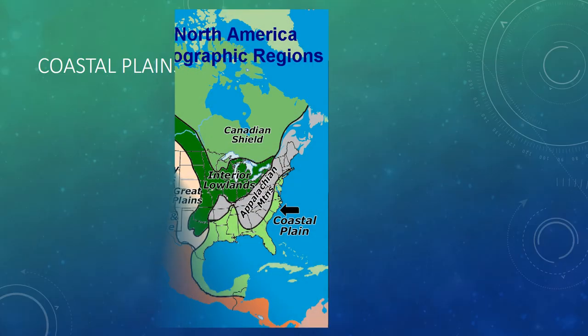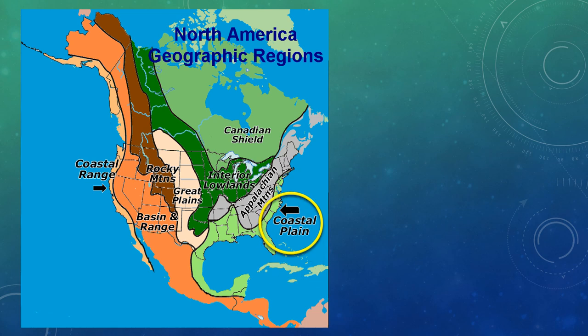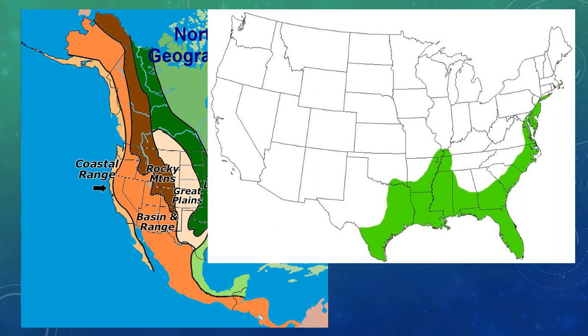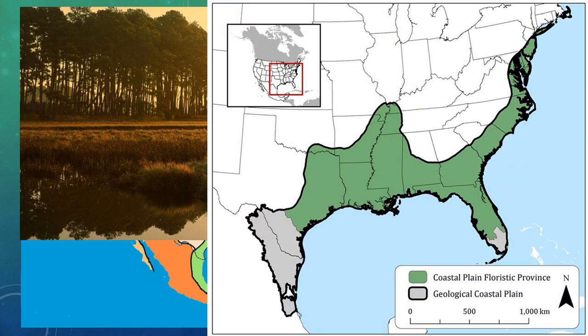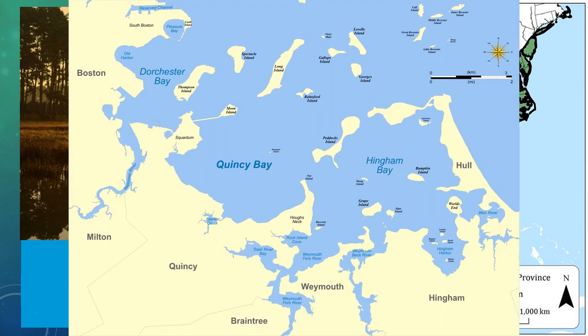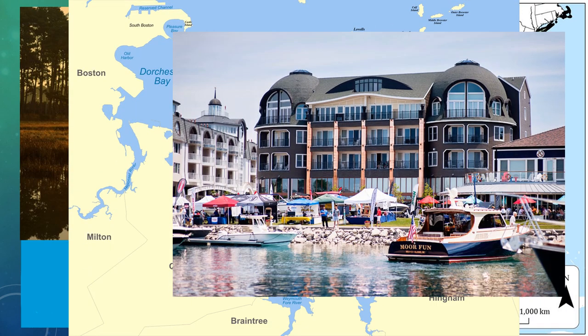The coastal plain stretches along the eastern seaboard of the Atlantic Ocean. These lowlands start in Massachusetts and make their way down the right side of many states that border the ocean and the Gulf of Mexico. This region abounds with hundreds of bays and harbors with calmer water as you make your way inland, which make exceptional sheltered areas for ships to dock and anchor.